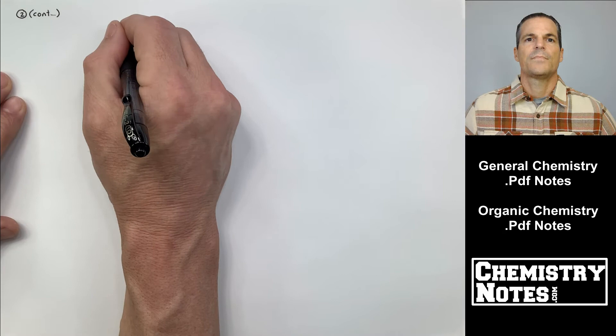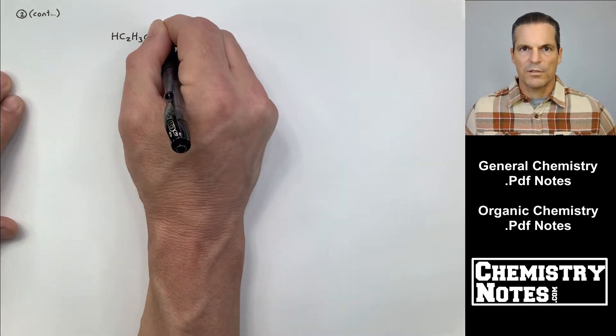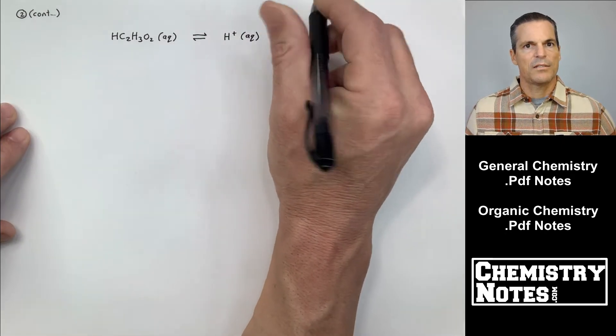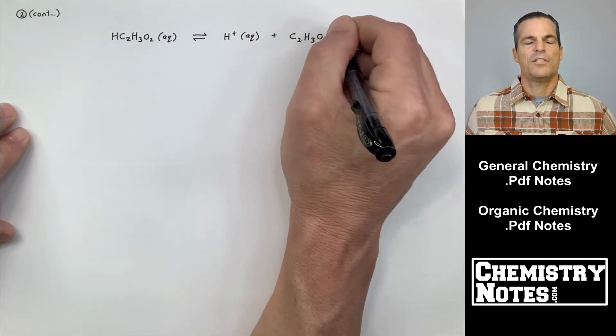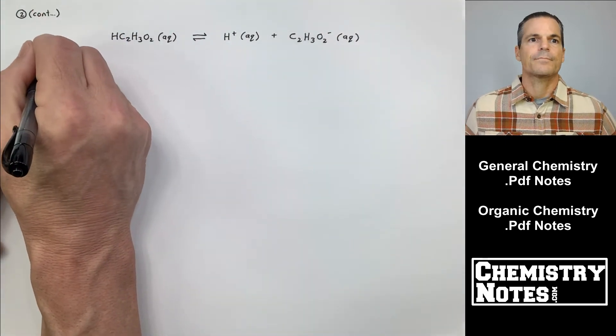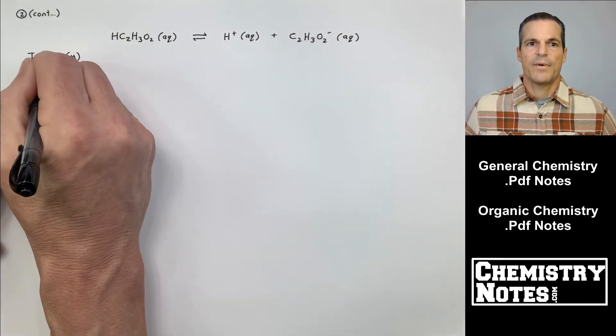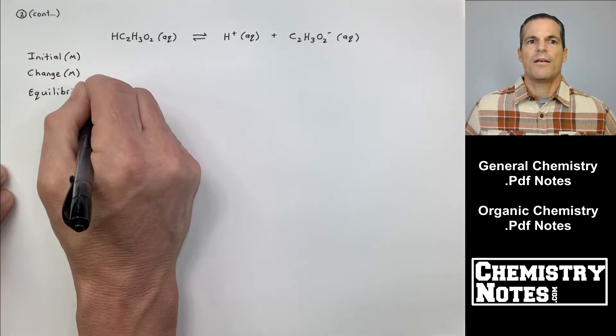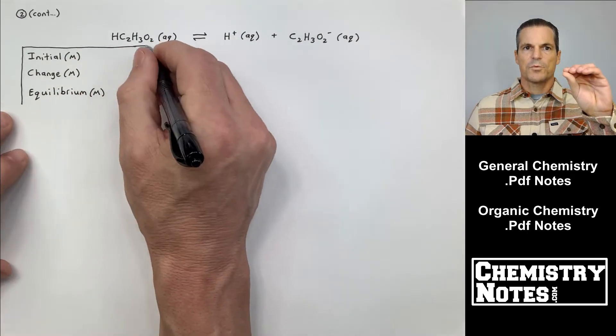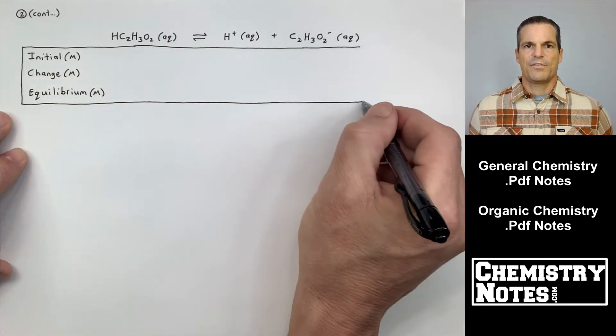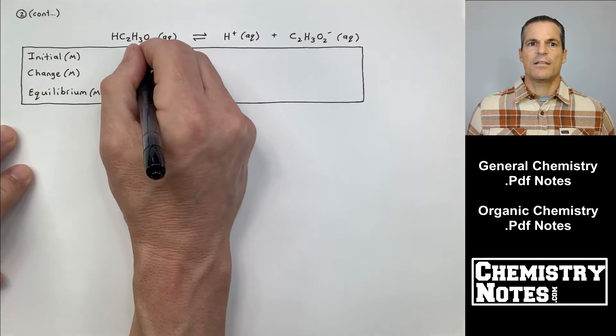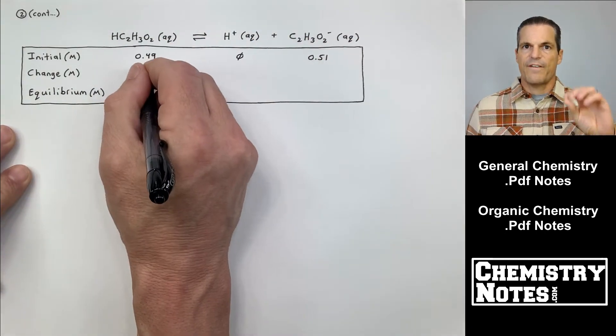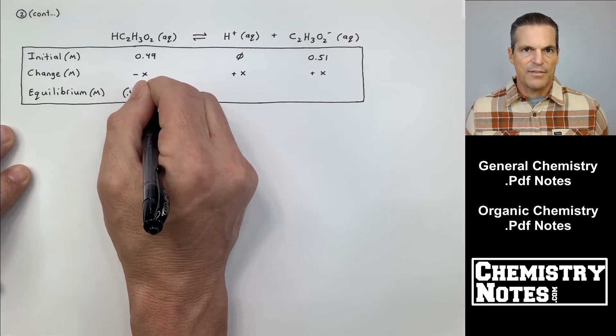Let's have a look. The OH- is gone. We're back to our original guys. HC2H3O2 and its common ion, C2H3O2-, so I set it up. I have my initial, I have my change, and I have my equilibrium. Now, in the original problem, the initials were 0.50 and 0.50. Now, my acetic acid is 0.49, and my acetate is 0.51. That's the only lasting effect that the addition of the 0.01 moles of OH- did.